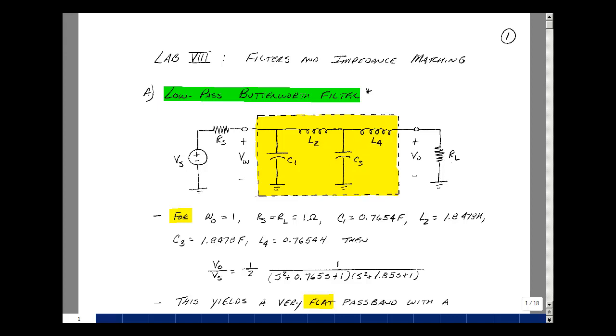Now, this particular filter is normalized in that it has a corner frequency at one radian per second and uses one-ohm resistors for the source and the load. Given these constraints and wanting this frequency at one radian per second, these are the values of the Ls and Cs that would produce a transfer function.